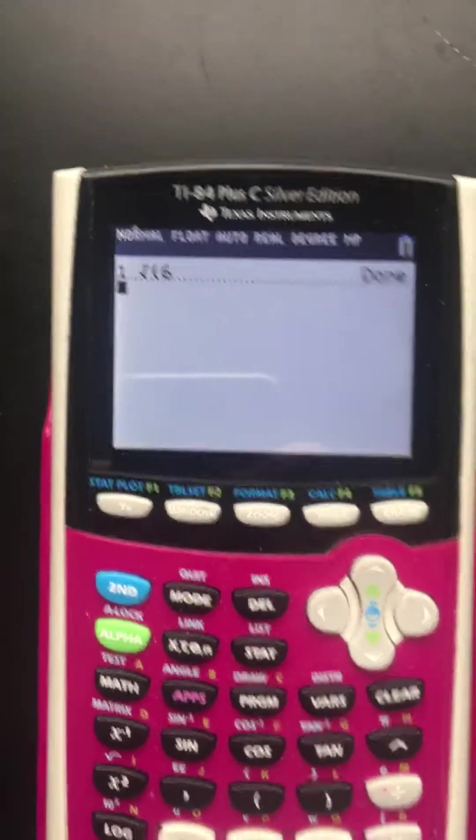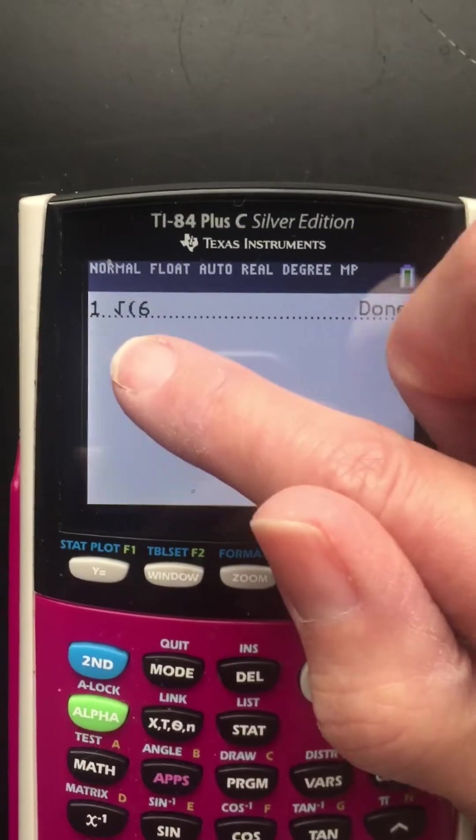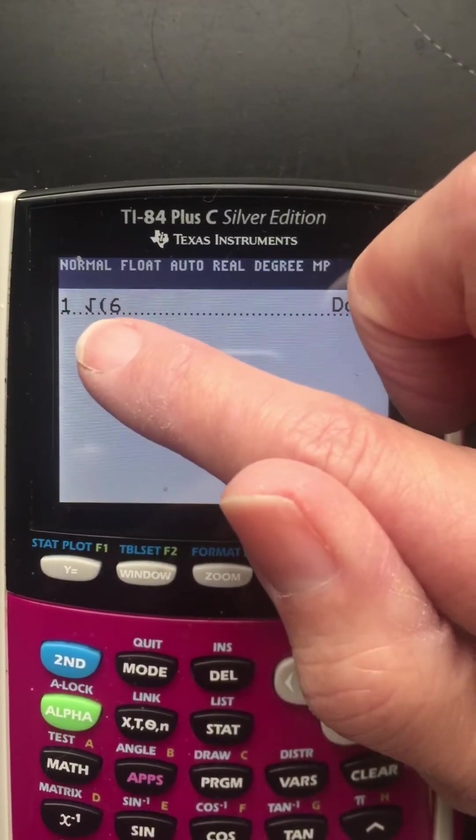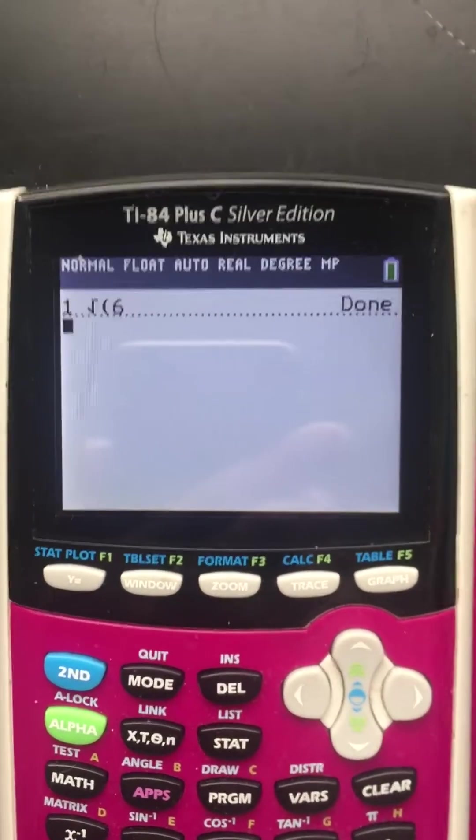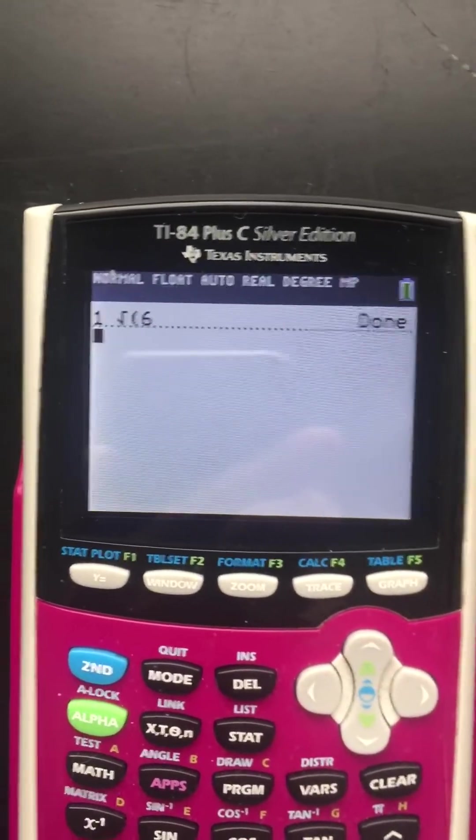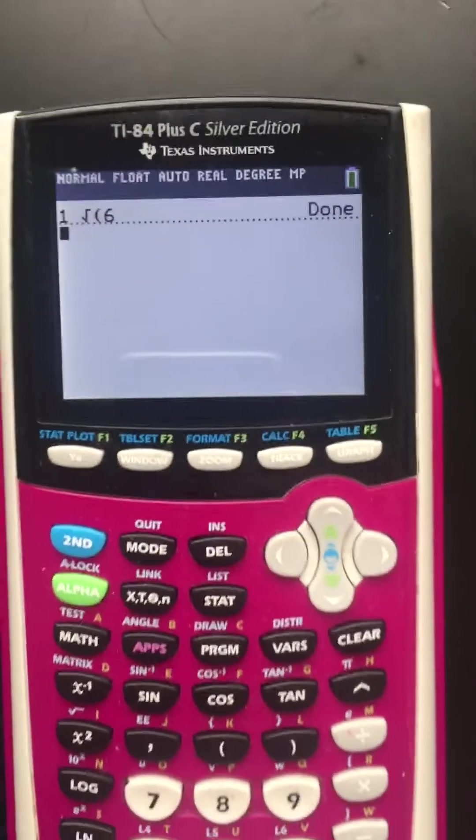So doesn't that make you happy? And even if the answer has a number, then the radical sign, then what's left under the radical, it will give it to you. So now it only works with square roots. It doesn't do cube roots or anything fancy like that.